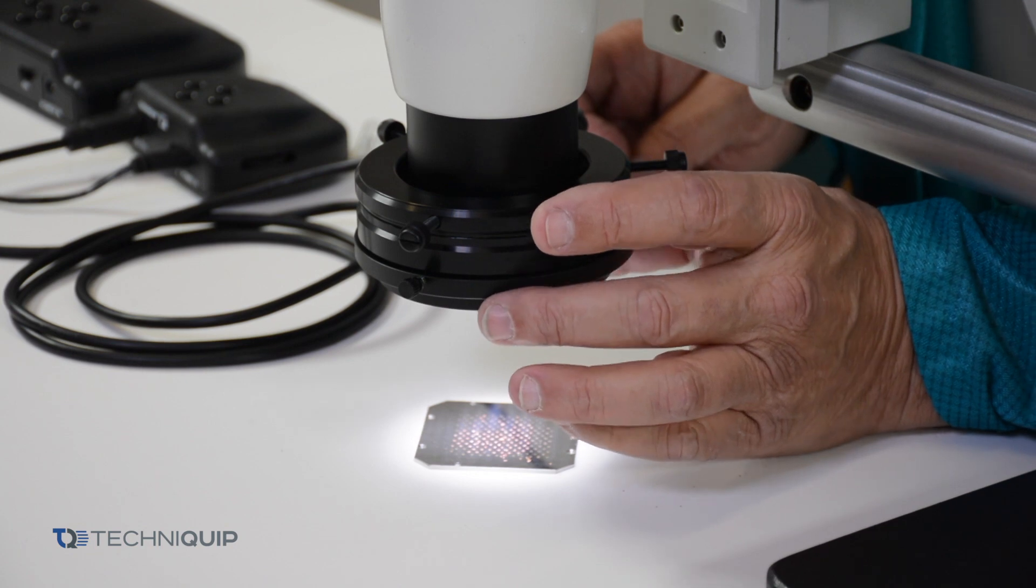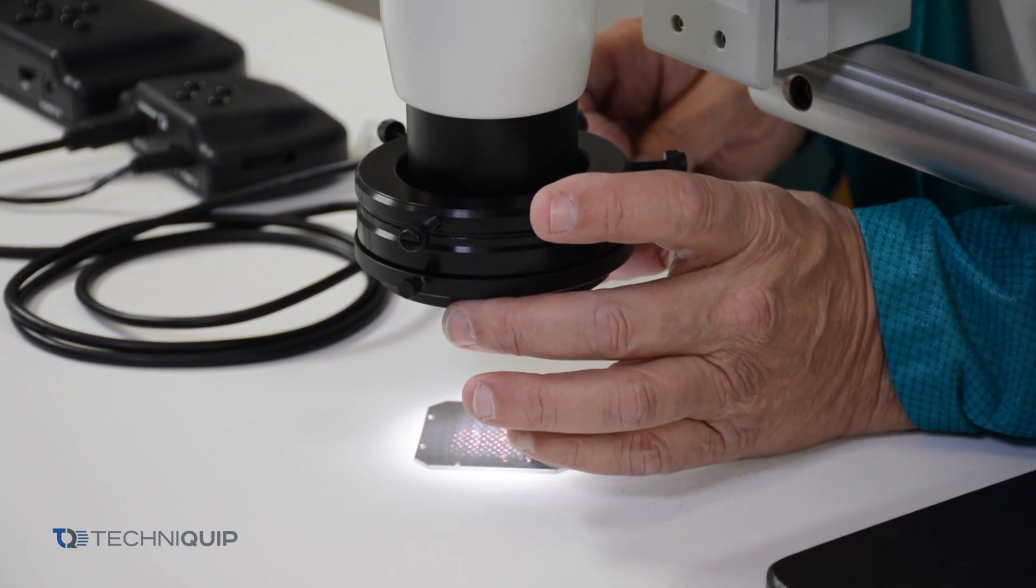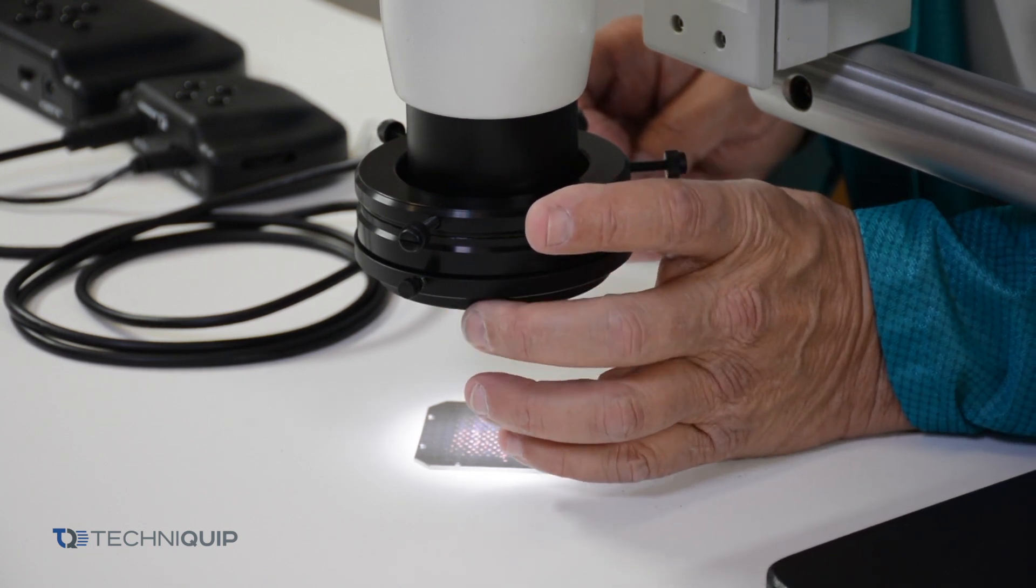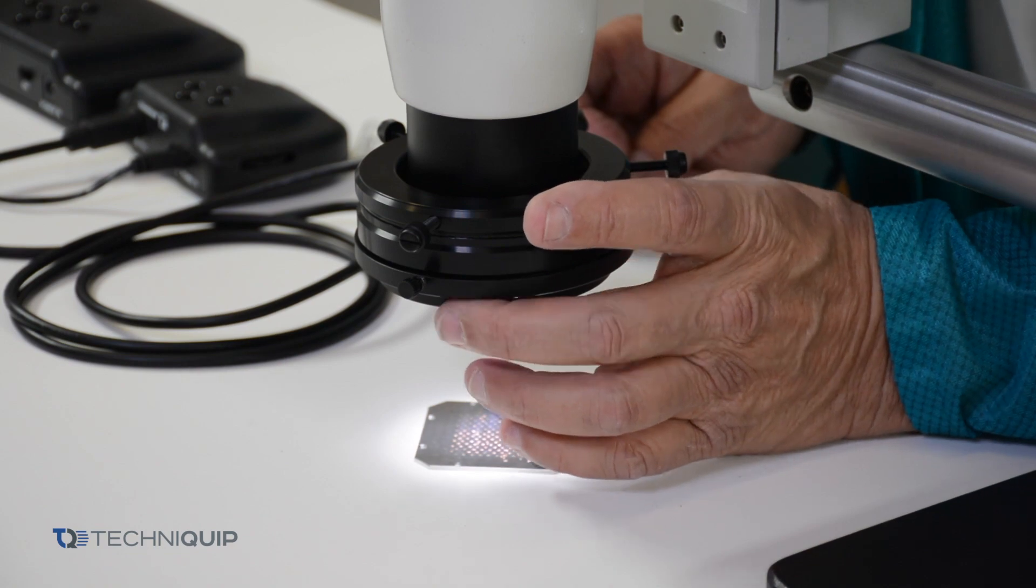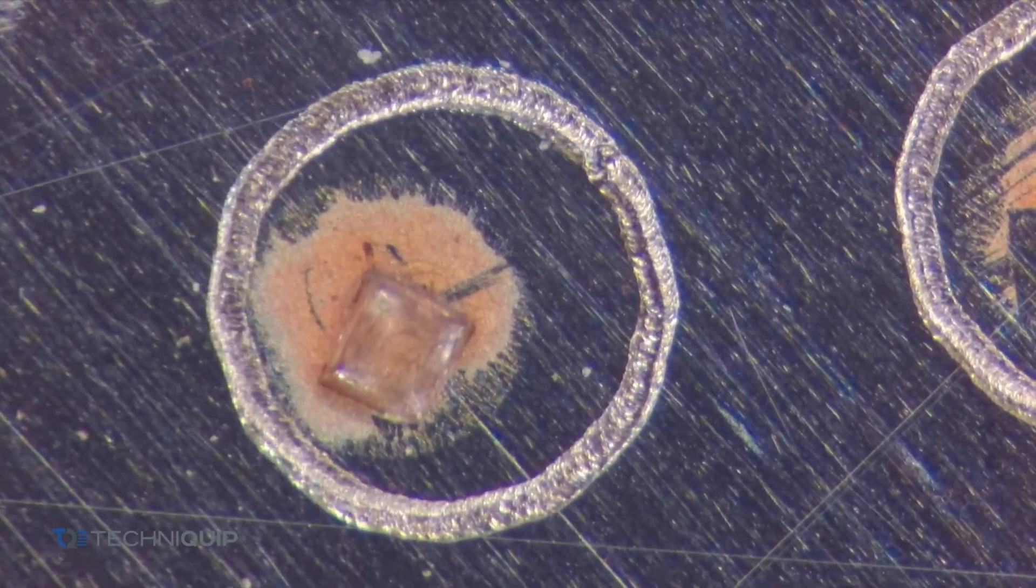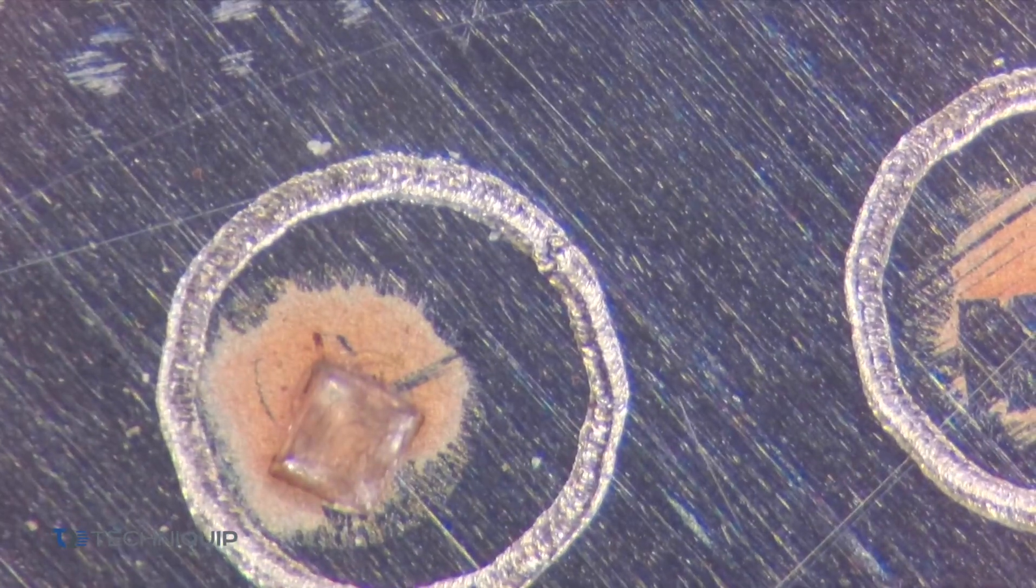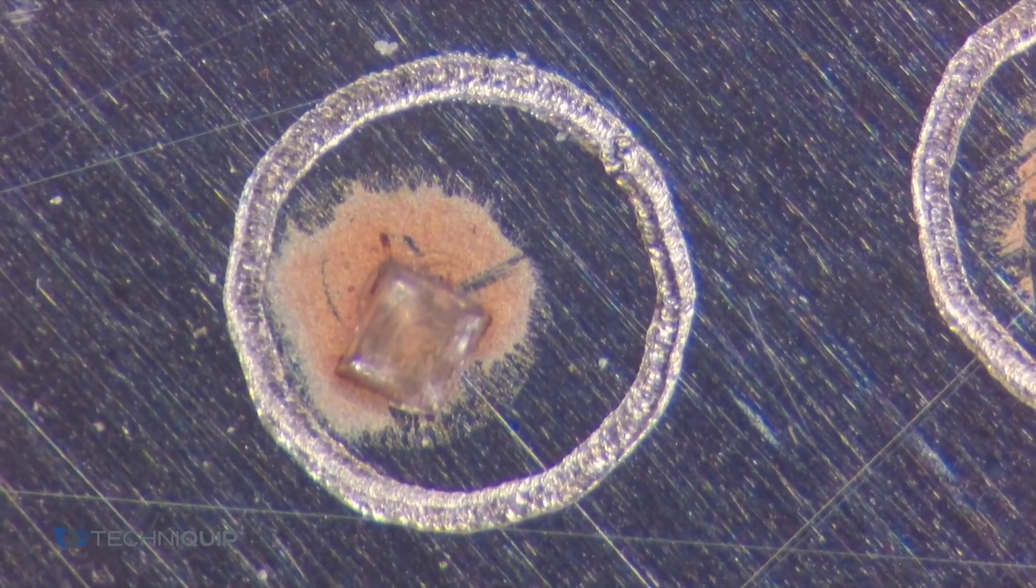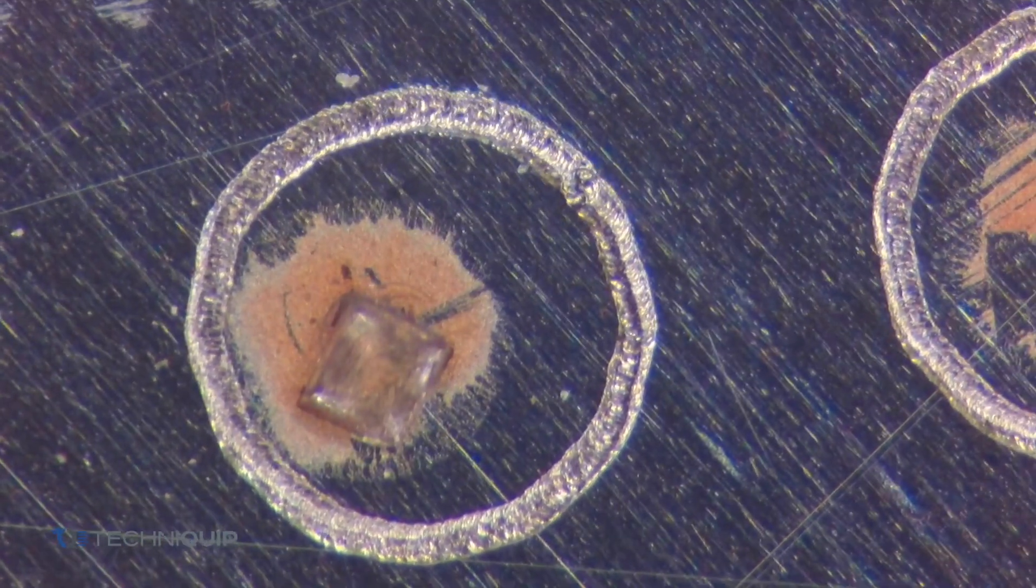Right now we're looking at a component that's very reflective. And you'll notice as I rotate, it starts to block out the reflections and all of a sudden you're seeing very high contrast and a whole different series of details.